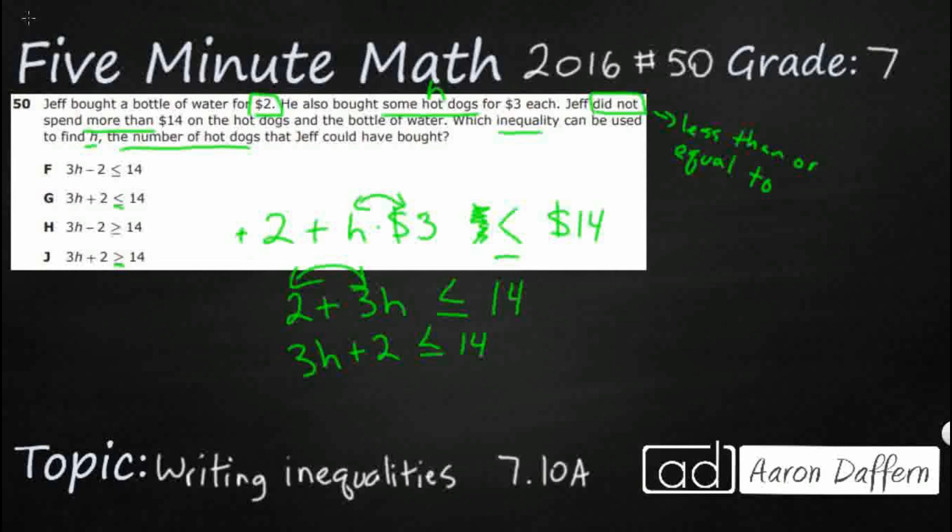So let's see if three works, where H could be three. So let's put a three right here. So if you've got three hot dogs, that's going to be nine bucks. Add the two, that's going to be 11. Yeah, that could work. So it looks like I've got this set up correctly.